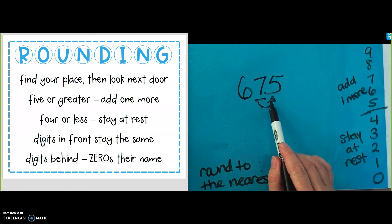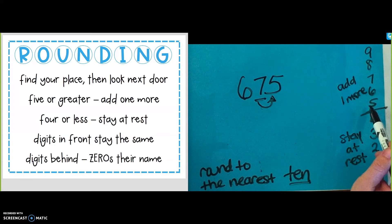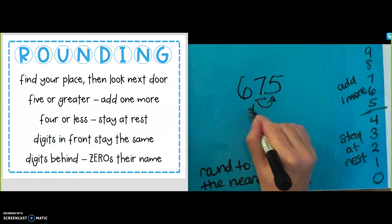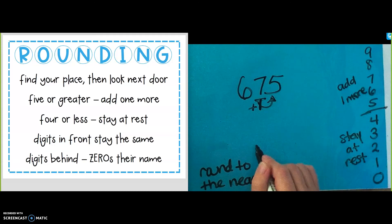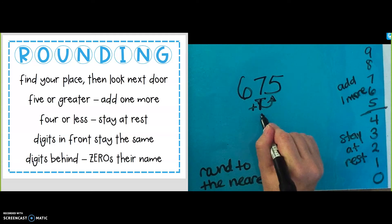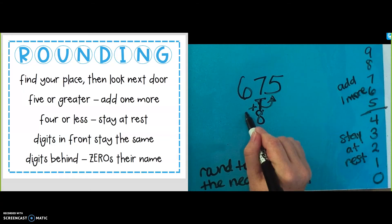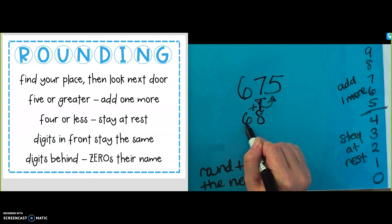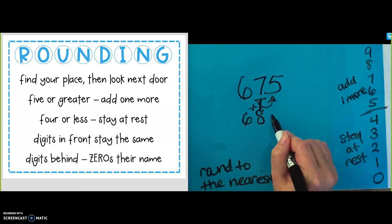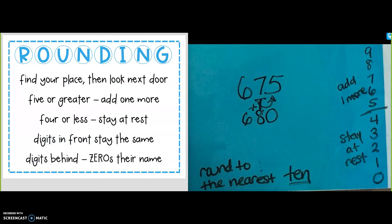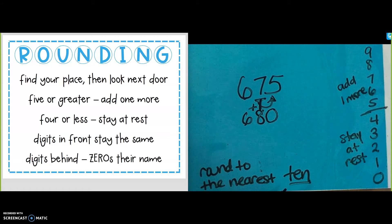The next door is the 5. It is 5 or greater, so I'm going to add one more to the 7. So now my number is 8 in the tens place. Digits in front stay the same, so I need to go back and add the 6 right here, and then digits behind — 0 is their name — so I'm going to put a 0 right here. So when I round 675 to the nearest 10, I get 680.